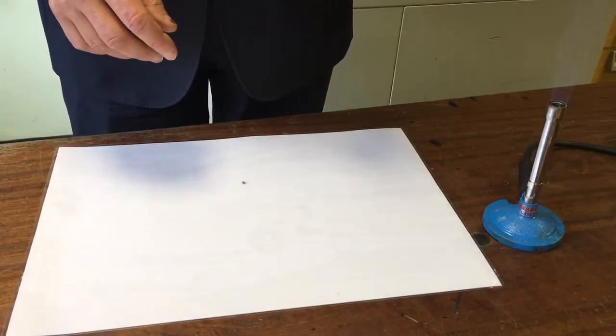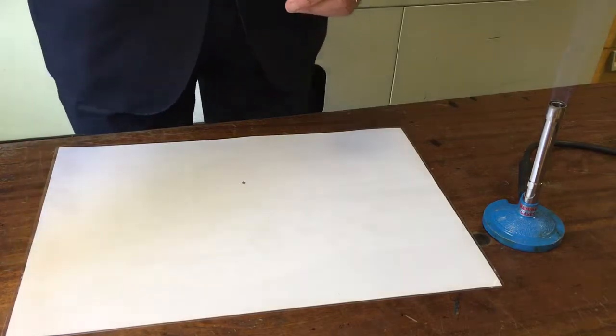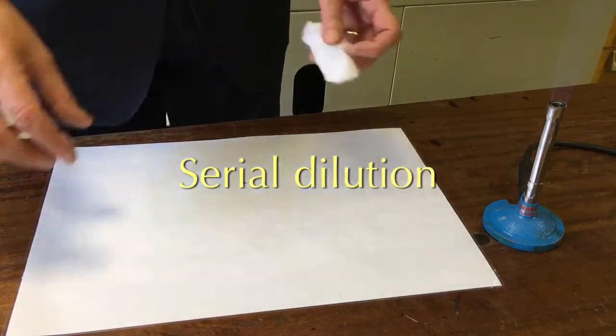In this technique I want to estimate the number of bacteria in a colony. I'm going to use a serial dilution to do this.